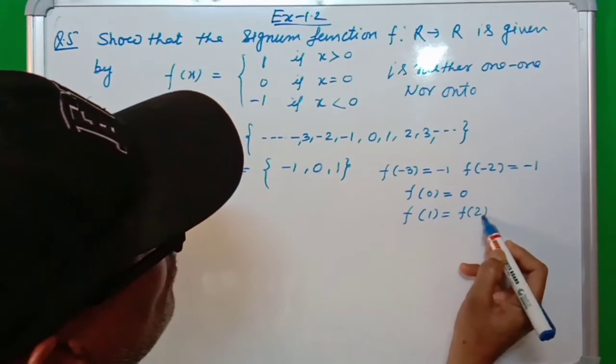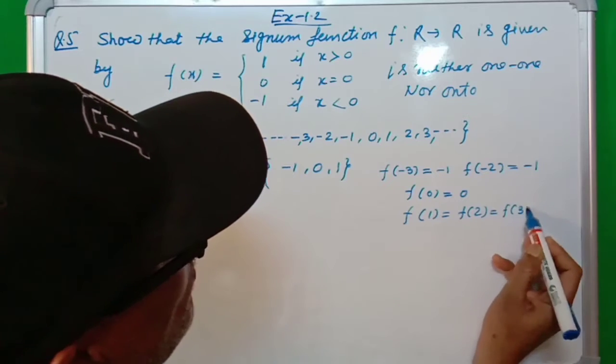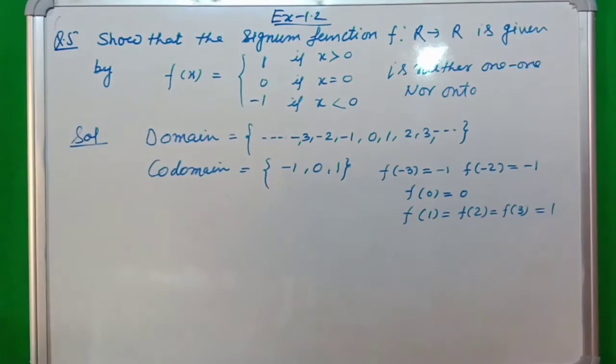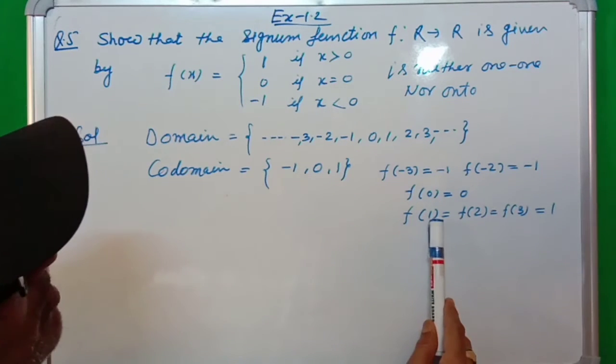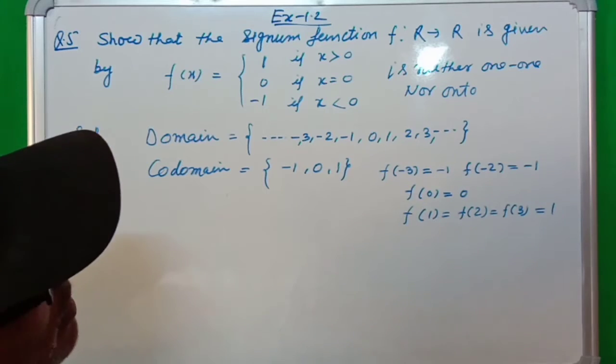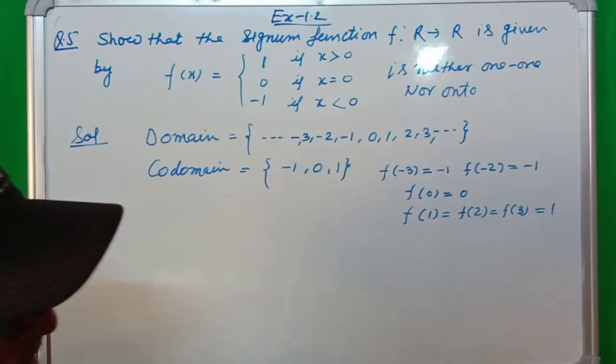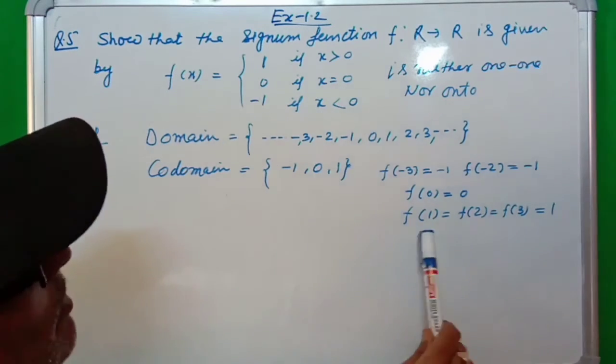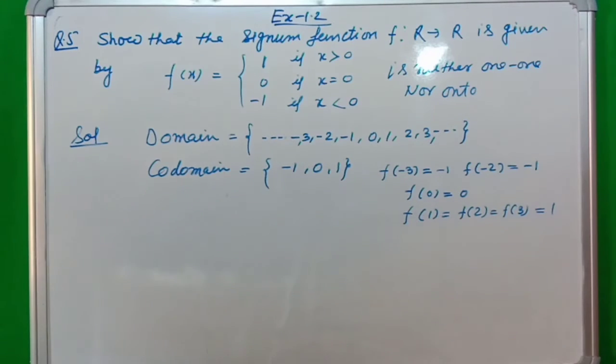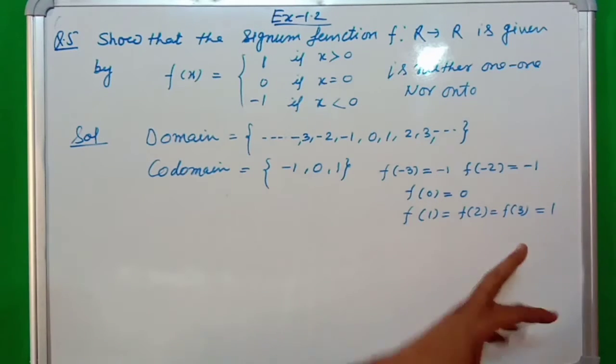f(1), f(2), f(3)... if we take different elements: one, two, three, then for different x values, the f(x) value comes out to be the same, plus one. If the value is same, that means the function is not one-one.